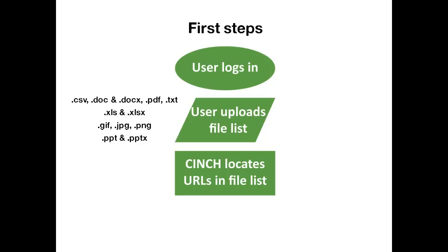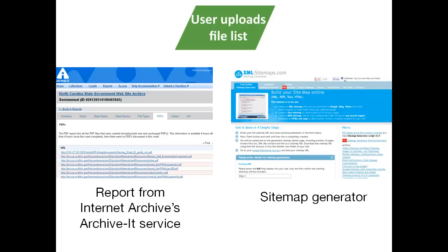Cinch then locates the URLs in that file list. You may be asking how you might create your file list — here are a few suggestions. If you currently subscribe to the Internet Archive's Archive-It service and are looking for PDFs, you can use the PDF report generated by that service. If you crawl websites using an alternative tool, you may also be able to generate a list using that tool. Site map generators are also a good way to find all of the files on a specific website, and their output can be used to create your file list for Cinch.